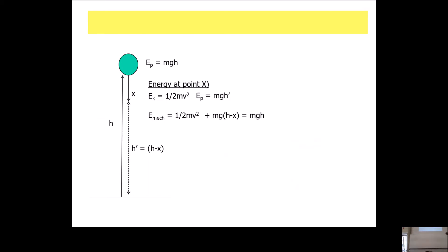The kinetic energy at that point plus the potential at that point — which is mgh where h is the new height — must equal the original potential energy. At the bottom, all the potential is lost, and the kinetic energy will now equal the original potential energy.